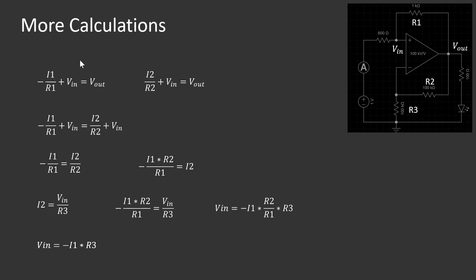We then take both of our first two equations, and we want to make them equal to cancel V_out. So we take this one and this one to give minus I1 over R1 plus V_in is equal to I2 over R2 plus V_in. We can then subtract V_in from both sides, giving us I1 over R1, or minus I1 over R1 equals I2 over R2. Now we know our third part of the equation has I2, so we're going to move that to one side, and we have minus I1 times R2 over R1 equals I2.